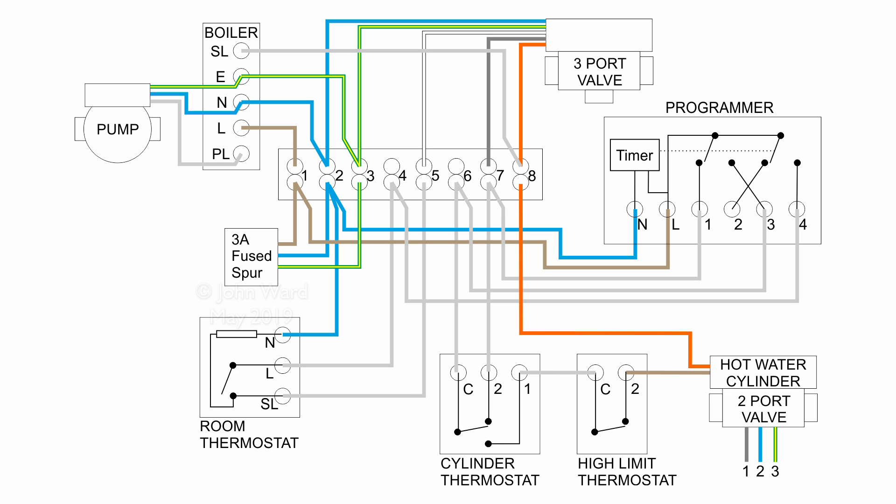So the method of operation in this case is fairly similar to what we had before, so power will come from the programmer there on terminal 3 with hot water on. They go through to terminal 6 there in the wiring centre, and just as before it goes to that cylinder thermostat. The difference here is that the output from the cylinder thermostat, which is pin 1 here, actually goes into the high limit thermostat. Now this is a normally closed thing, so in normal circumstances the power just goes straight through there and out on pin number 2.